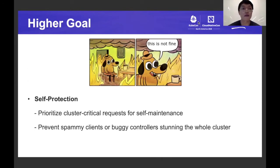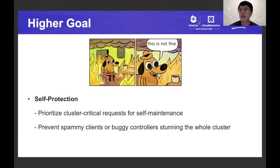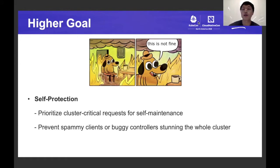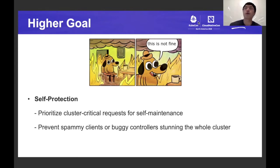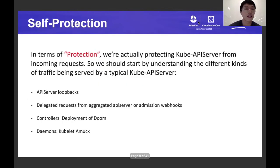There are two higher-level goals of this feature. The first one is self-protection, which covers two points: first, prioritize cluster-critical requests for self-maintenance; and second, prevent buggy clients or buggy controllers from stunning the whole cluster. The first point means we sort all client requests into different priorities, and the second means we don't allow any client requests to spoil the whole cluster — there will be fair isolation between clients.